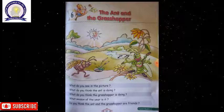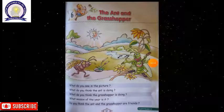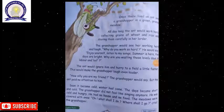The ant and the grasshopper. Let's begin Chapter 6. Once there lived an ant and a grasshopper in a green grassy meadow.